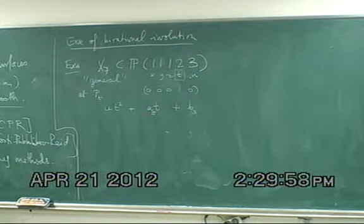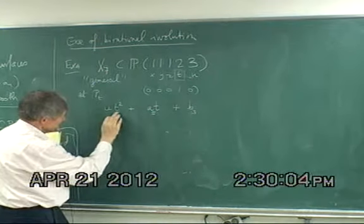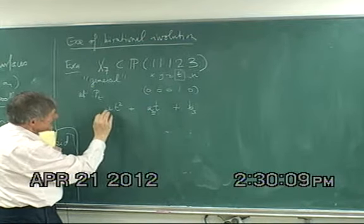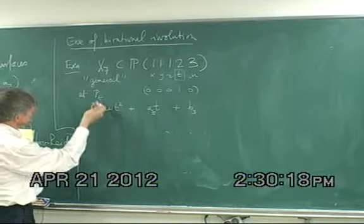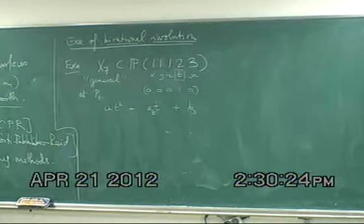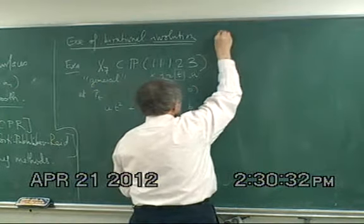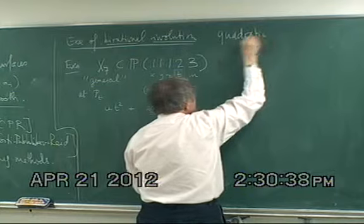The point is that this gives a birational involution — involution means a group action of order two — and the point about this is that the equation is quadratic. So these are going to be quadratic involutions.